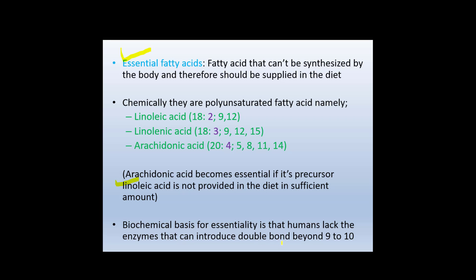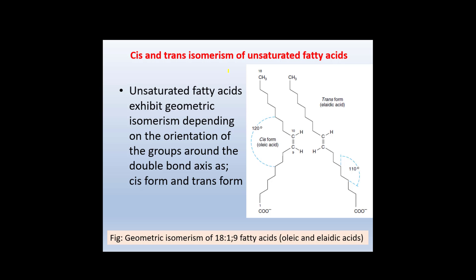The biochemical basis for the essentiality of these fatty acids is that humans lack the enzymes that can introduce double bonds beyond carbon 9–10. Unsaturated fatty acids exhibit geometric isomerism depending on the orientation of groups around the double bond axis, existing as cis and trans forms. You can see the cis form of oleic acid and the trans form of elaidic acid illustrated here.